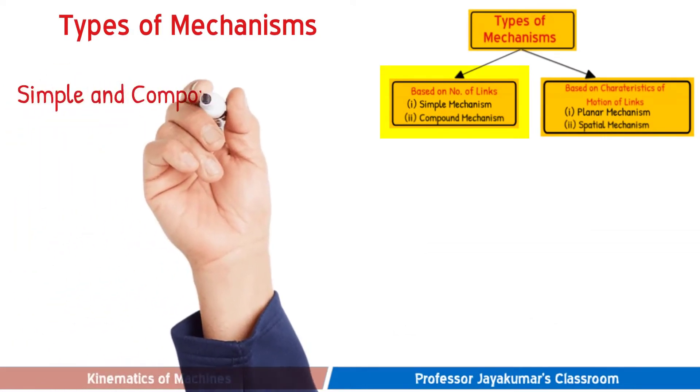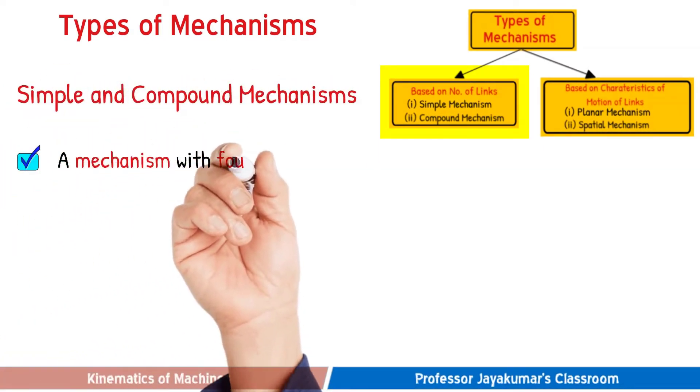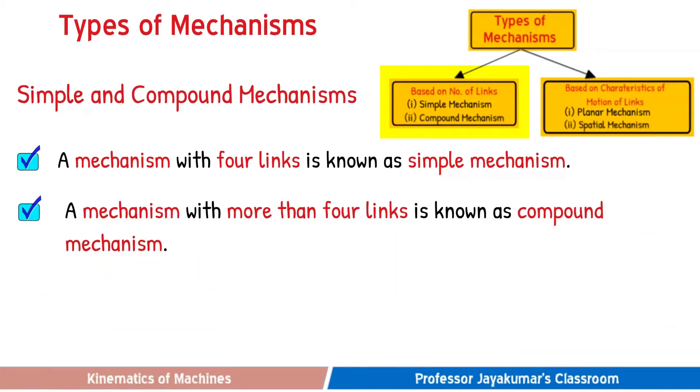First, let us see the difference between simple and compound mechanism. If a mechanism is having four links, that is known as simple mechanism. If a mechanism has more than four links, then that is known as compound mechanism.